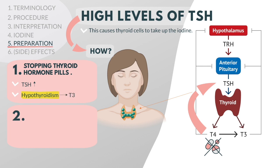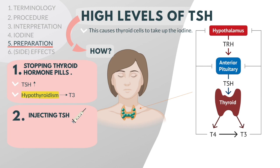T3 is a short-acting form of thyroid hormone that is usually taken after T4 is stopped, until two weeks before the radioactive iodine treatment. Alternatively, TSH can be increased sufficiently without stopping thyroid hormone medication by injecting a synthetic form of TSH into your body. The benefit of this approach is that the patient can continue taking thyroid hormone medication and avoid possible symptoms related to hypothyroidism.